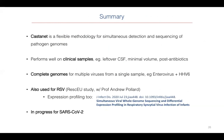In summary, Castanet is a flexible methodology for simultaneous detection and sequencing of pathogen genomes. It performs really well in clinical samples, even leftover CSF with minimal volume, and also works despite antibiotic exposure, which culture doesn't. We can get complete genomes for multiple viruses from a single sample. We have also used it successfully in the RESCUE study to sequence over 400 RSV samples for phylogeography with Professor Andrew Pollard. We can do differential expression profiling from the same data — just published in JID. And we're now using a very similar method for SARS-CoV-2, with specific probes and plans to update the panel to include it.